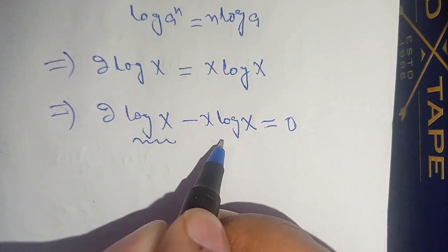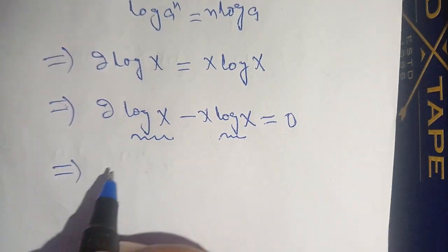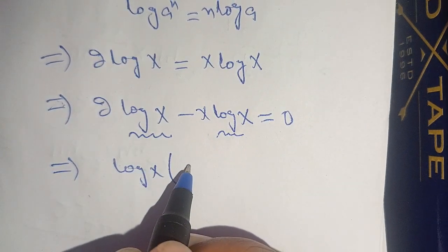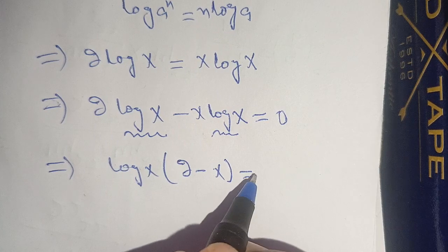Here is log(x) and log(x), we can take out the common factor. We get log(x) multiplied by (2 - x) = 0.